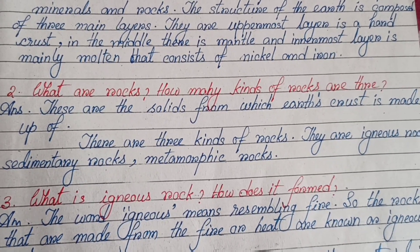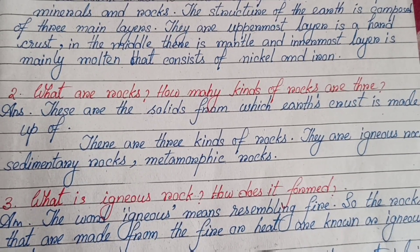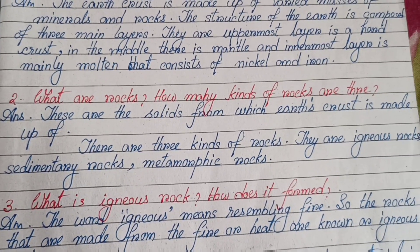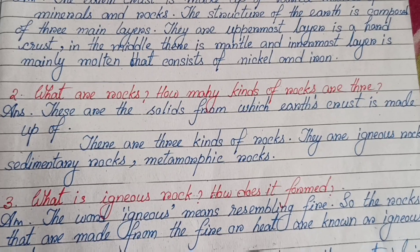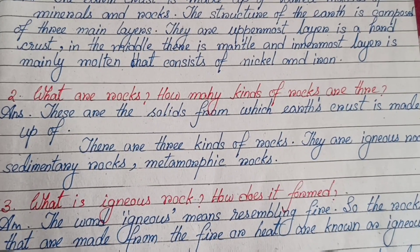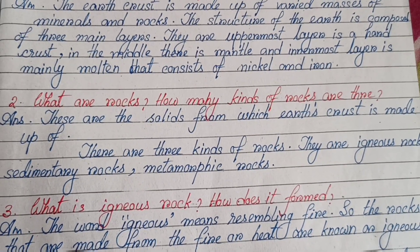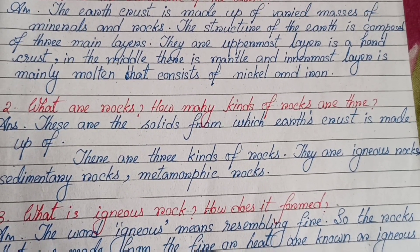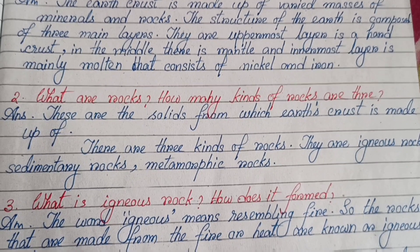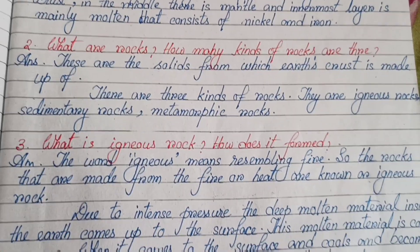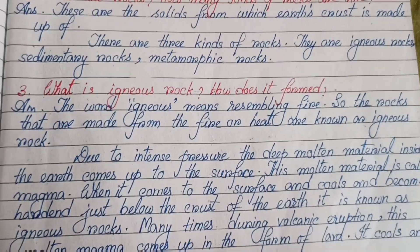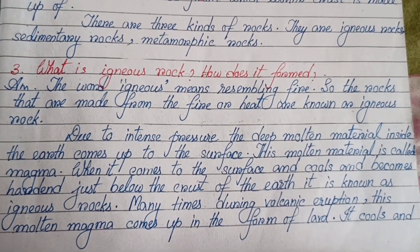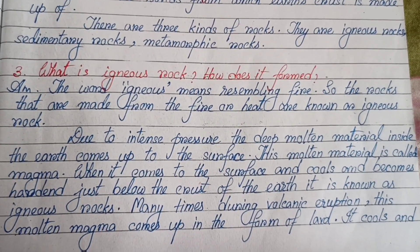Number two: What are rocks? How many kinds of rocks are there? Rocks are the solids from which the Earth's crust is made up of. There are three kinds of rocks: igneous rocks, sedimentary rocks, and metamorphic rocks. Number three: What is igneous rock? How does it form? The word igneous means resembling fire, so the rocks that are made from fire or heat are known as igneous rocks.